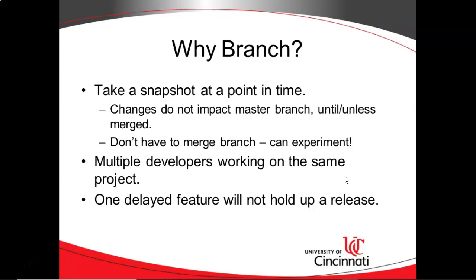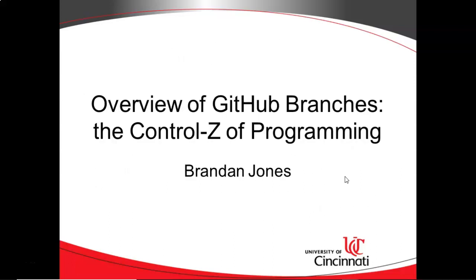Another thing is multiple developers working on the same project. Each developer could have a separate branch, or perhaps we could separate the branches by feature. In reality, these two will likely overlap because in agile development, we want to work on one task at a time. So likely there will be one feature with one developer working on it, and that will correspond to a branch. And one delayed feature will not hold up a release. Because branches give us the ability to take a snapshot at a point in time, play around, and then maybe merge or maybe not merge, it helps us to move faster and experiment without any negative impact on the timeline. It also allows us to queue up a lot of features and take only those which are truly ready.